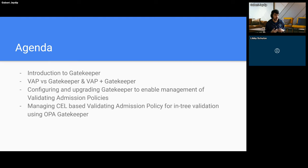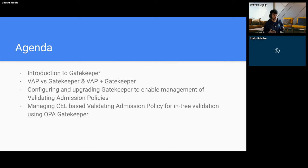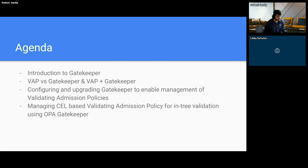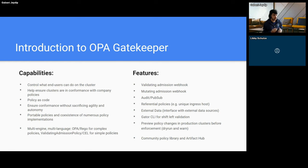Today we are going to learn about how to manage and use validating admission policies through Gatekeeper. First, we are going to get refreshed on what exactly OPA Gatekeeper is, what capabilities Gatekeeper has, and what features it provides. Then we will see how Gatekeeper is different from validating admission policy, and what values Gatekeeper can provide alongside validating admission policies. We'll learn how to enable Gatekeeper to manage validating admission policy, and then we'll go through how to create policy templates and constraints in Gatekeeper that use a VAP underneath. And finally, we'll go through the demo and see how everything comes together.